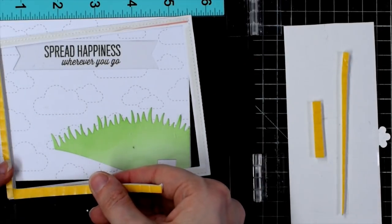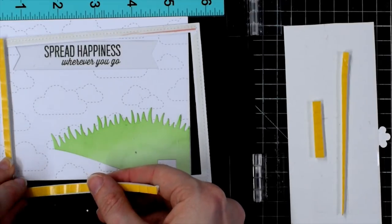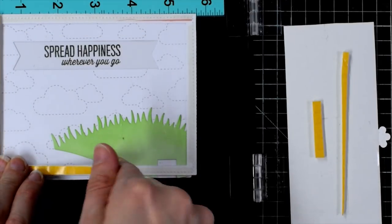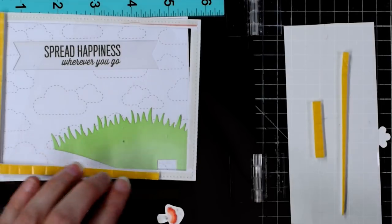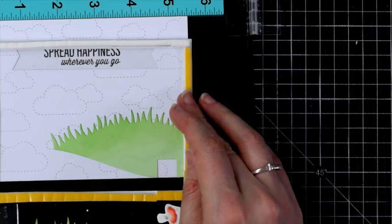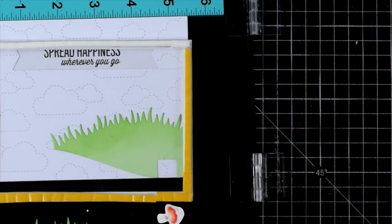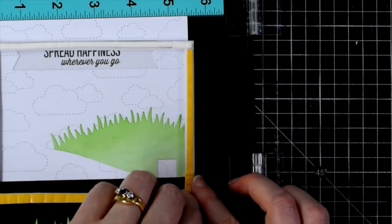Now I need to add some foam tape around my frame so that there's enough room for all of my sequins and beads to move around. This is a 3mm foam tape and I find that it's perfect for shaker cards.